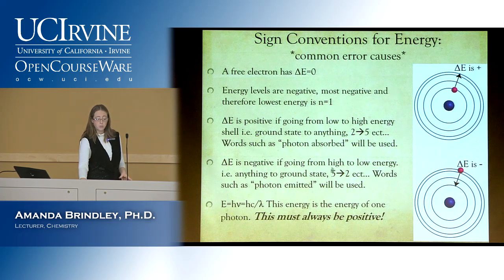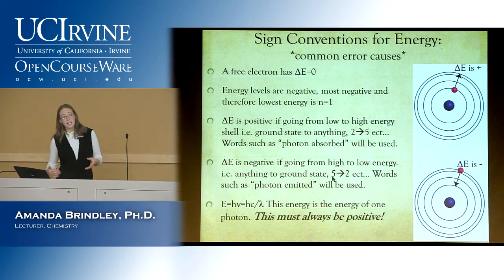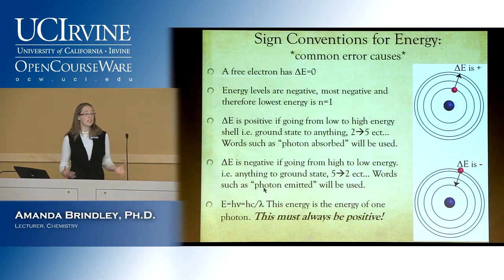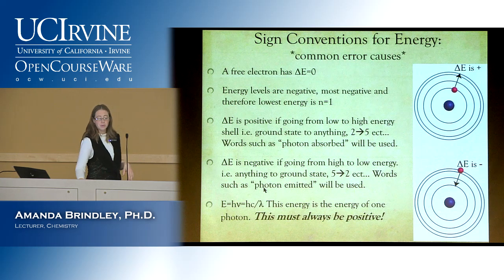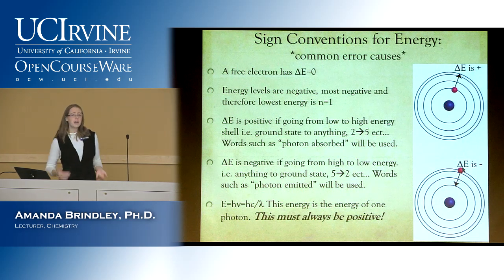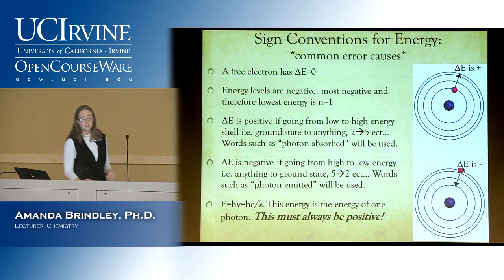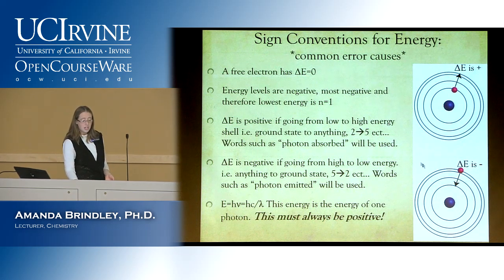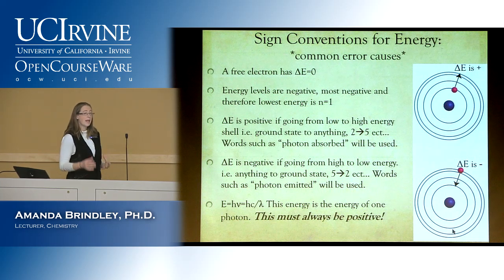Now the reverse: what if you're going down in energy, from n equals five to n equals two? You'll see words like 'photon emitted,' meaning the electron is losing energy and going down. In that case, your final energy is lower than your initial energy, so final minus initial is a small number minus a high number — which is negative. So delta E is negative.